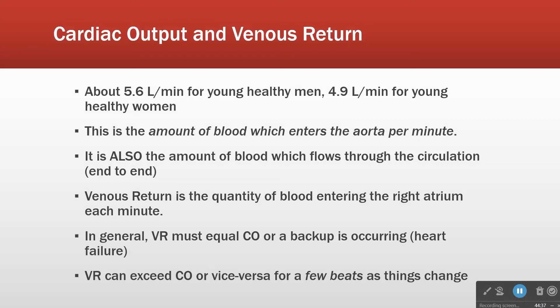Cardiac output — what is it in a normal person? Healthy young men: 5.6 liters. Healthy young women: 4.9. Why the difference? Difference in body mass, that's all. You ladies have less mass to supply blood to, so you get to have less of a cardiac output.